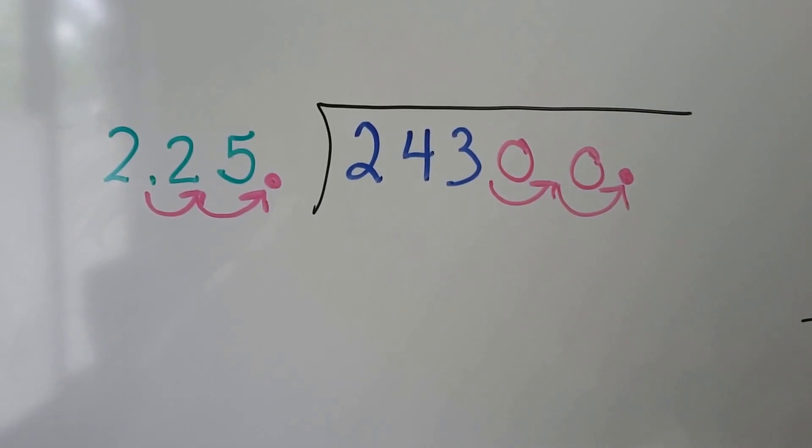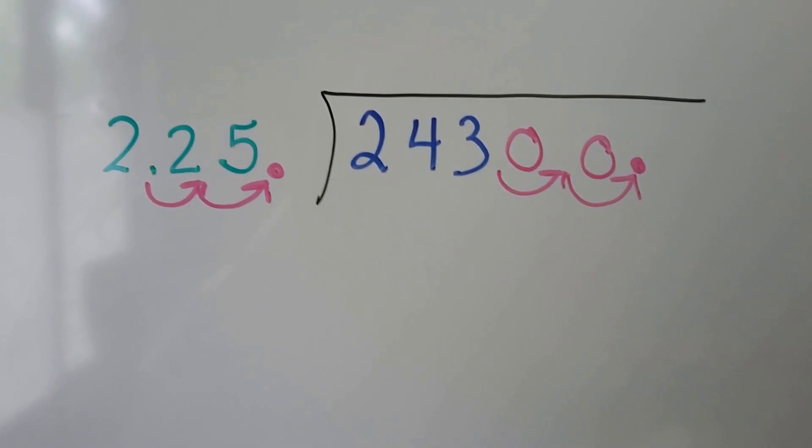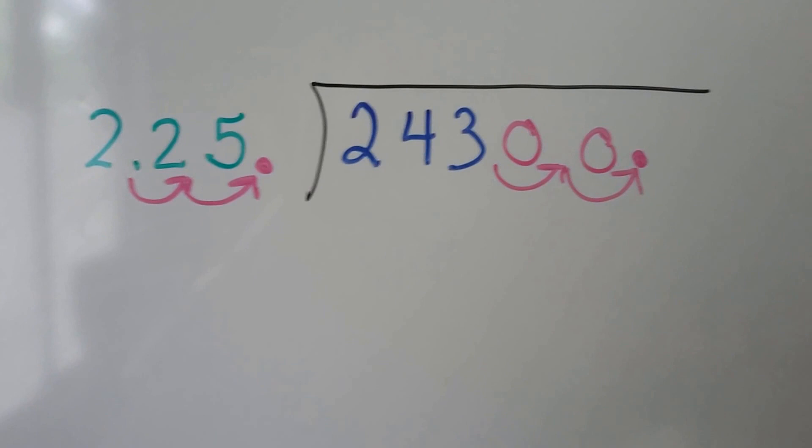This is a personal video from Melissa. You were right. You moved the decimal place over two spaces to get rid of that decimal point.